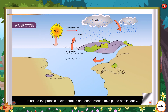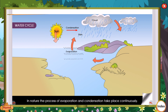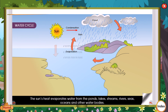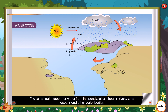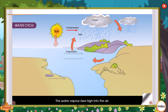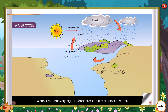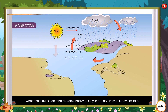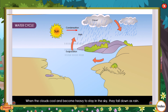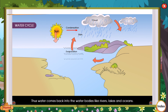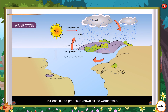In nature, the processes of evaporation and condensation take place continuously. The sun's heat evaporates water from ponds, lakes, streams, rivers, seas, oceans and other water bodies. The water vapour rises high into the air; when it reaches very high altitudes, it condenses into tiny droplets of water. These droplets join together to form clouds. When the clouds cool and become too heavy to stay in the sky, they fall down as rain, and water comes back into water bodies like rivers, lakes and oceans. This continuous process is known as the water cycle.